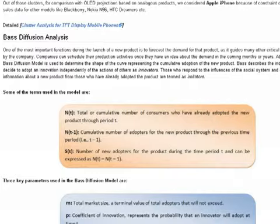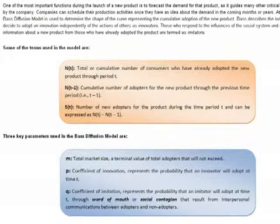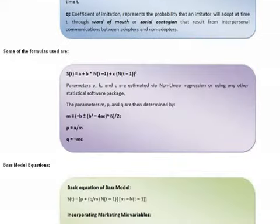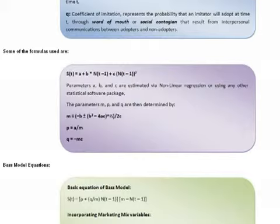We studied the sales behavior of proxy analogous products, namely iPhones and LCD monitors. Key terms used in this model: N is the total or cumulative number of customers who have already adopted the new product through time period T. Nt-1 is the total number of customers for the previous time period. S is the number of new adopters, essentially the difference between Nt and Nt-1. The key parameters are: M being the total market size; P being the coefficient of innovation, which represents the probability that an innovator will adopt the product at time t; Q being the coefficient of imitation, which is the probability that an imitator will adopt the product at time t, usually the result of word of mouth or social contagion from interpersonal communications between adopters and non-adopters. Some fundamental formulae and equations have also been used.